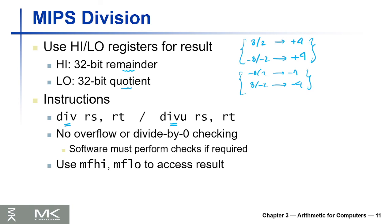There is also no overflow in division, which is good, because the output is always less than or equal to the input. To access the high and low register values, we use the mfhi (move from high) and mflo (move from low) instructions. That's it for division — thank you very much for watching and see you in the next video.